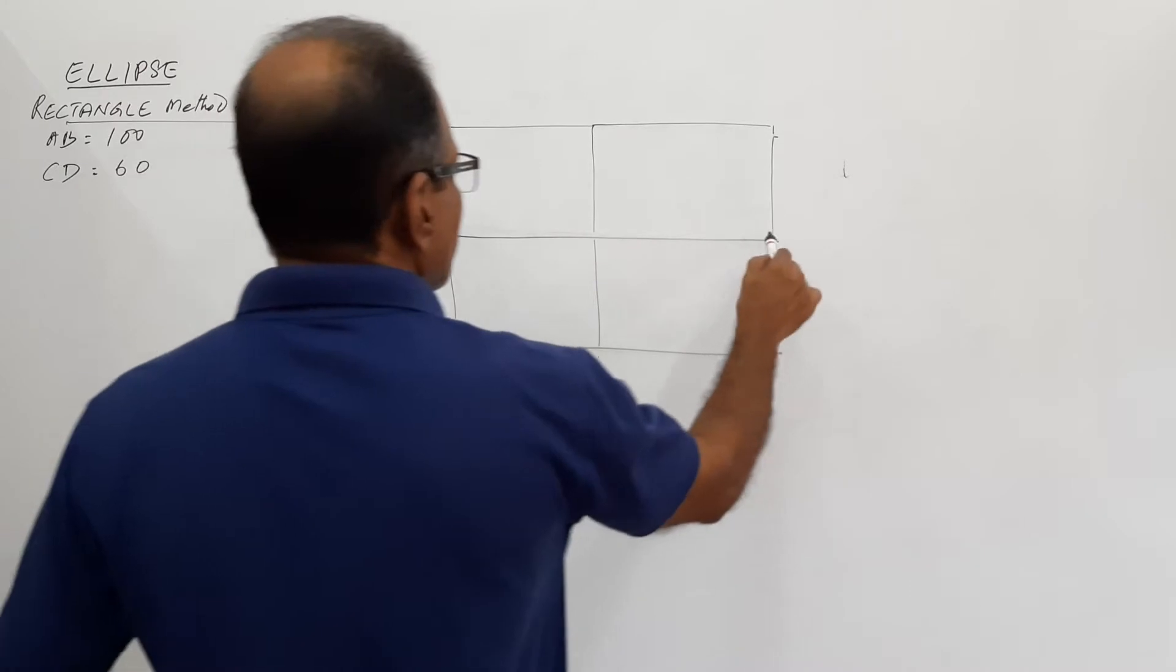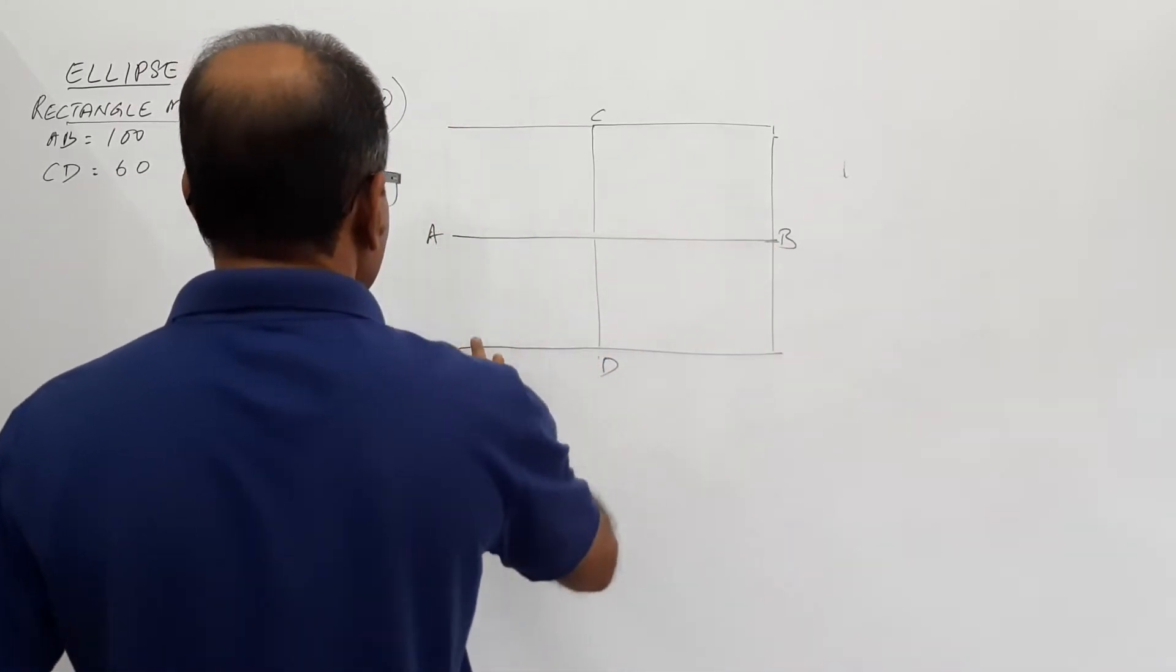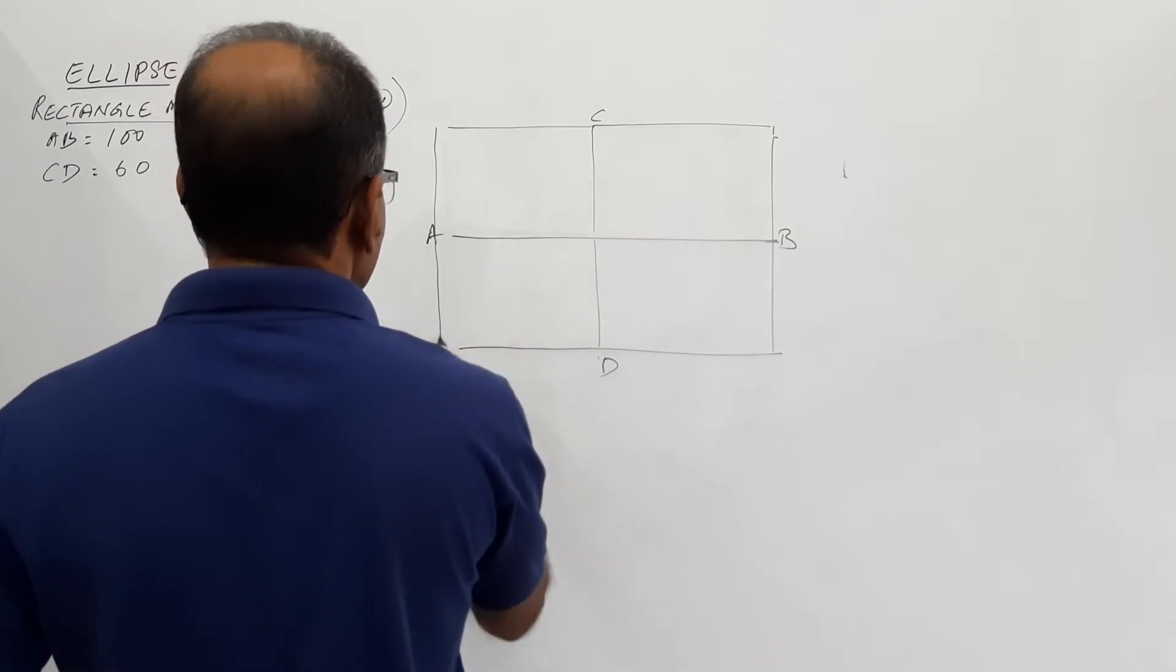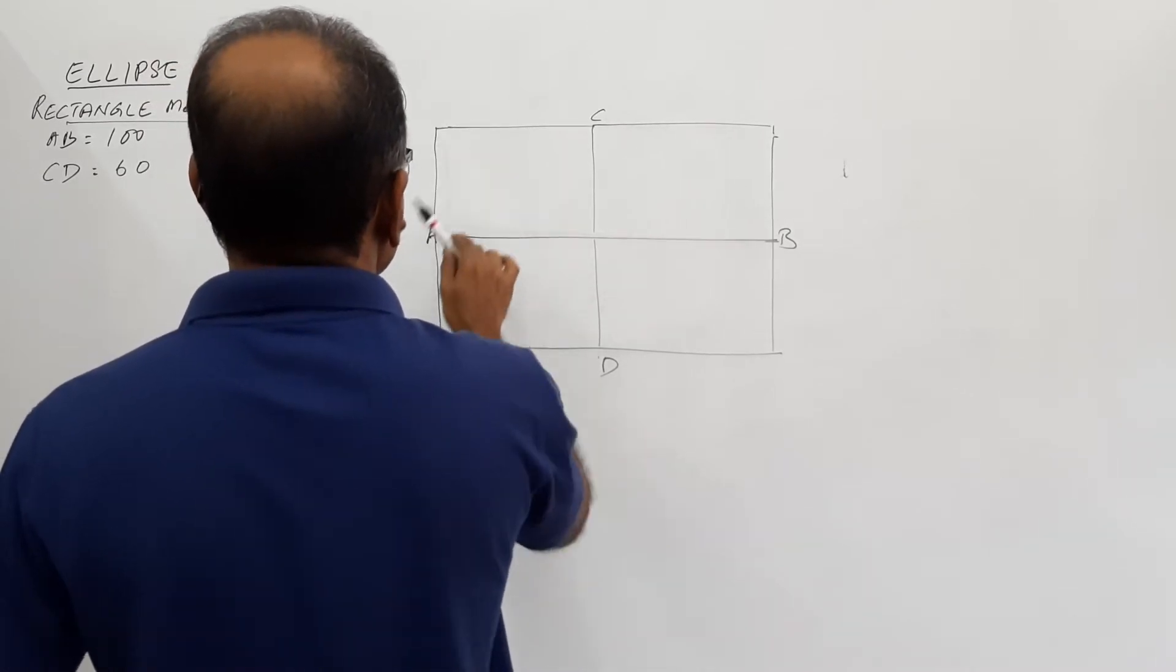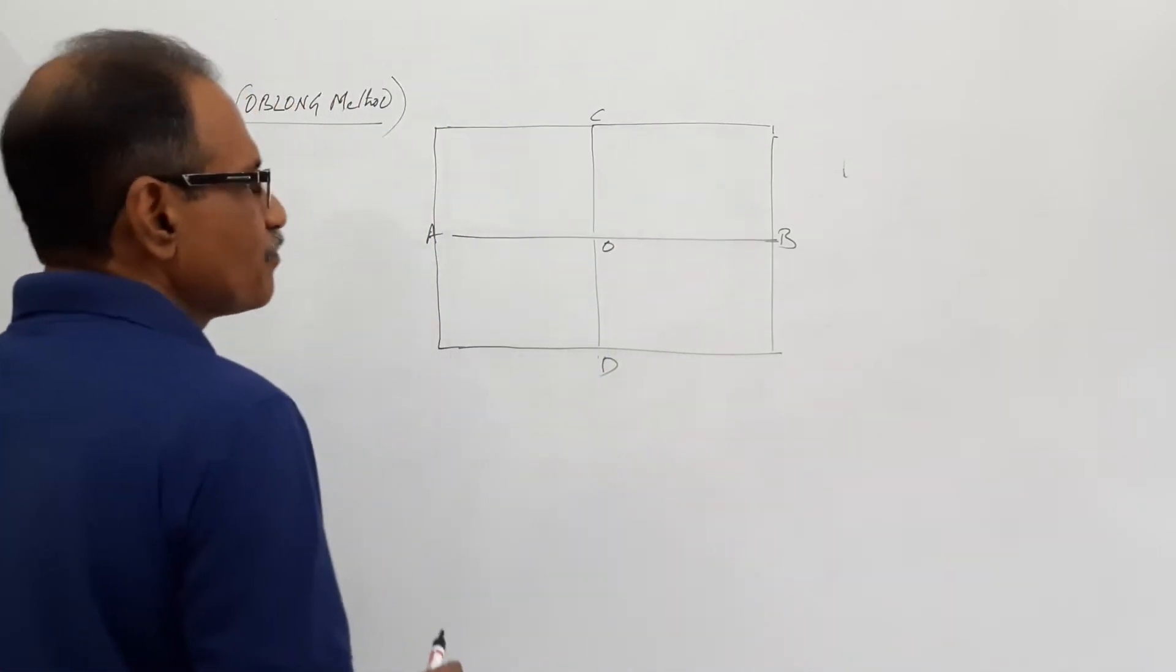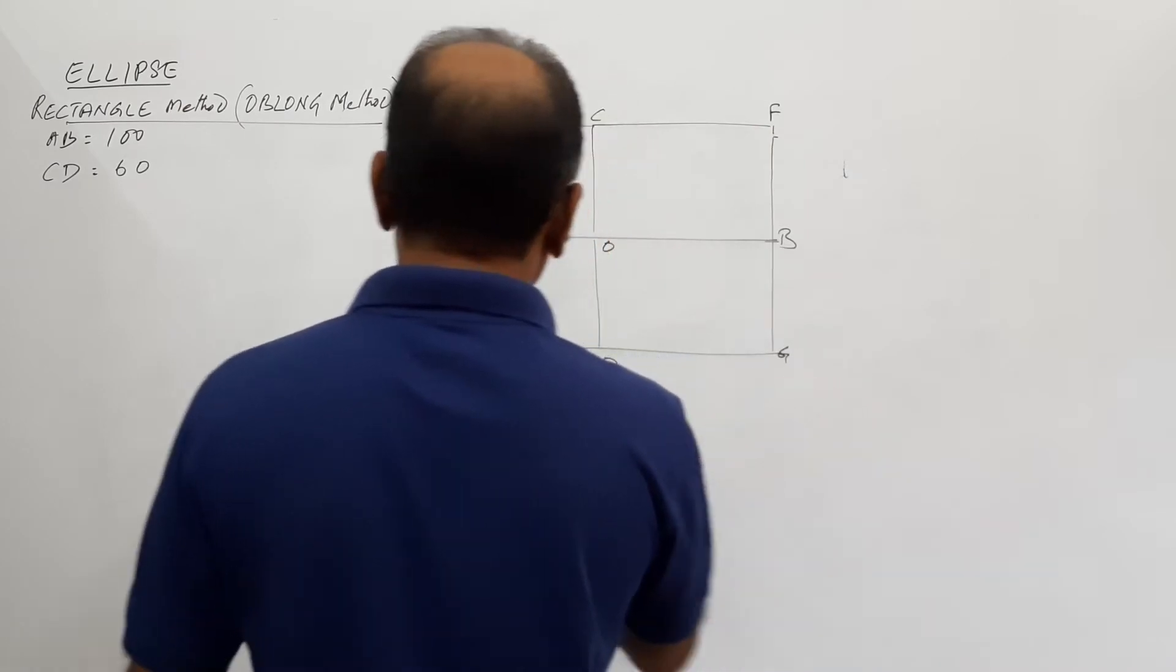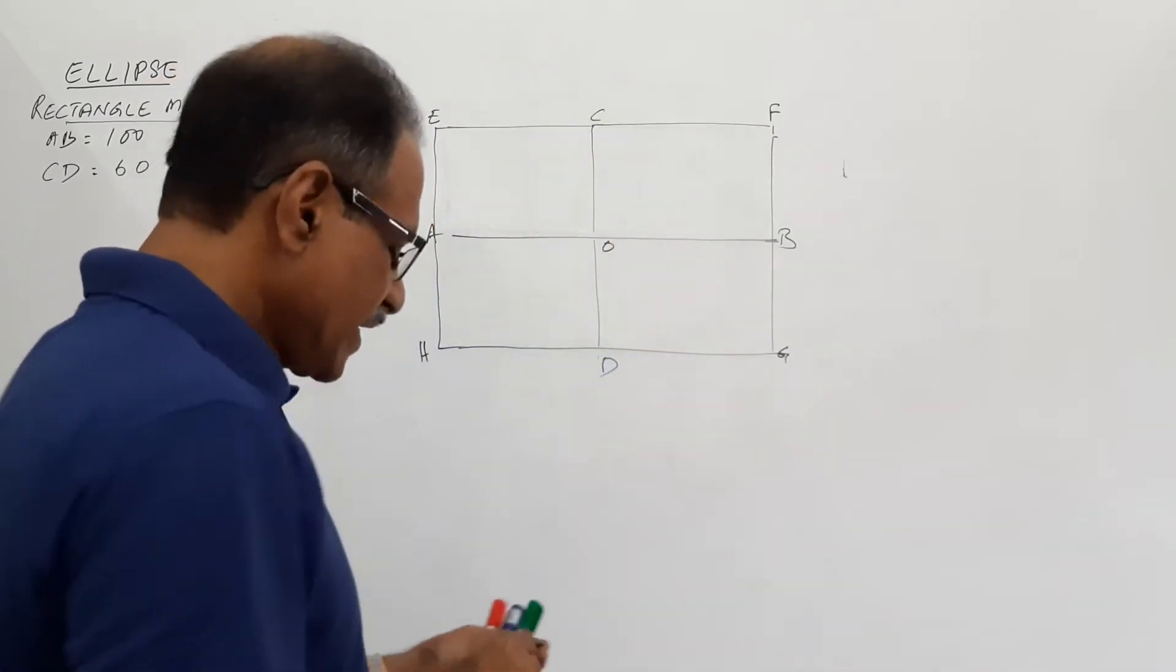I call this AB, the major axis, CD, the minor axis, and O as the center. Then, this can be named as EFGH.